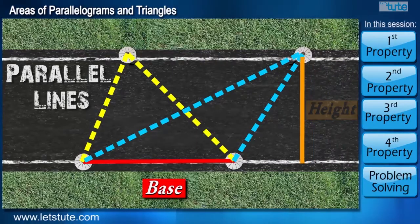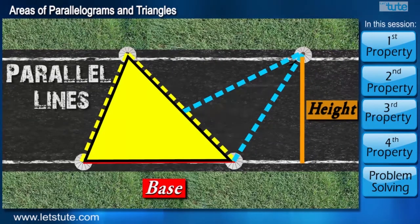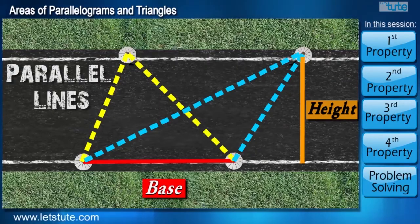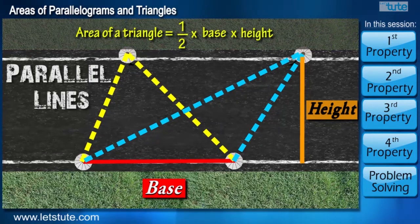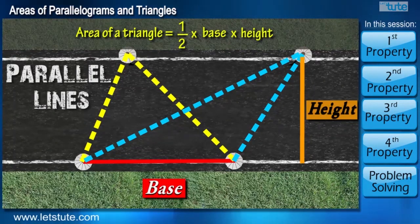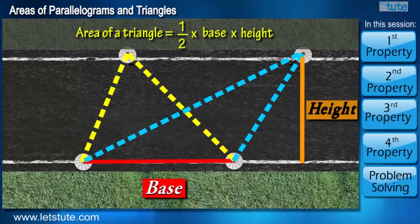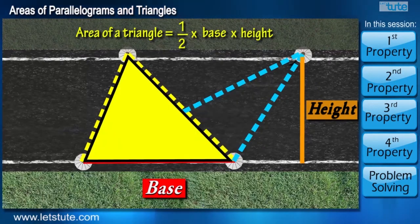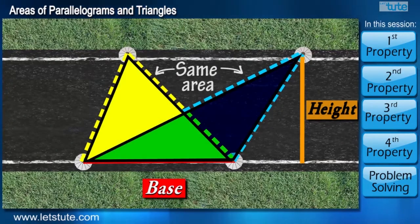We know the distance between two parallel lines is always constant. Therefore, height and base is same for these triangles. So when we calculate the area, we use a formula half into base into height. Now since the base and the height of both triangles is same, the area of the triangles is also going to be the same.